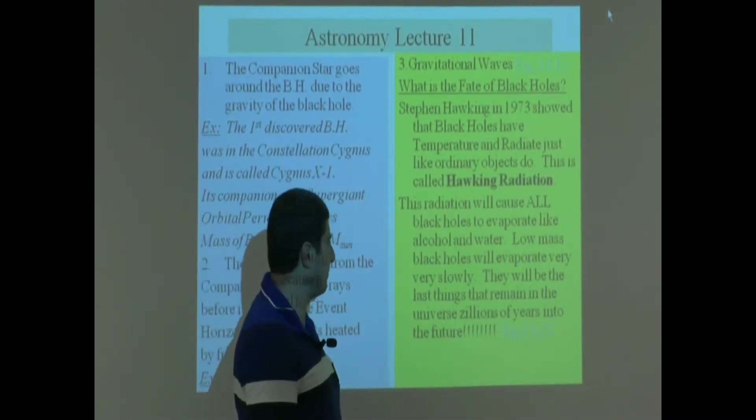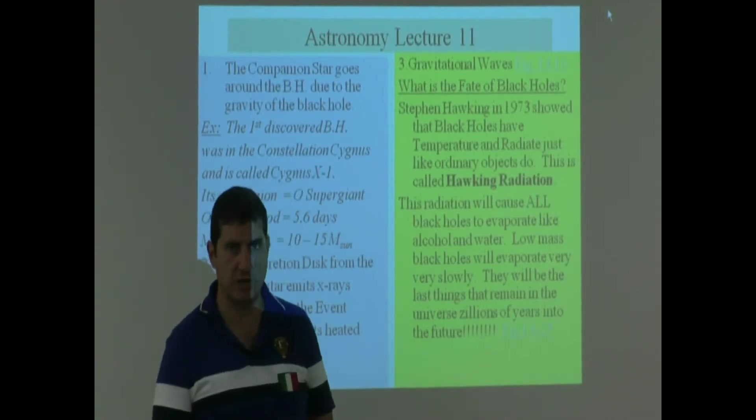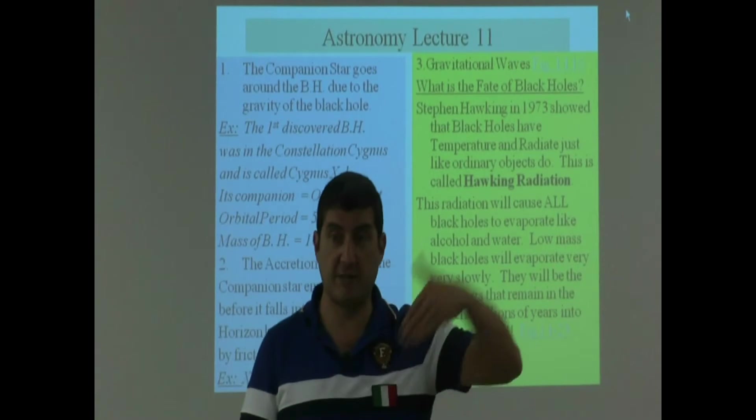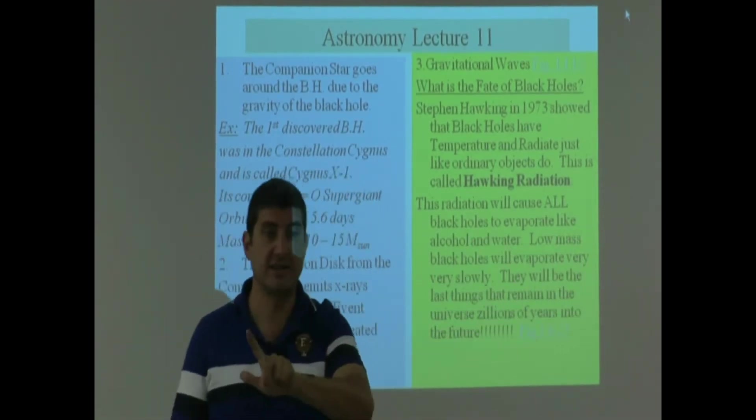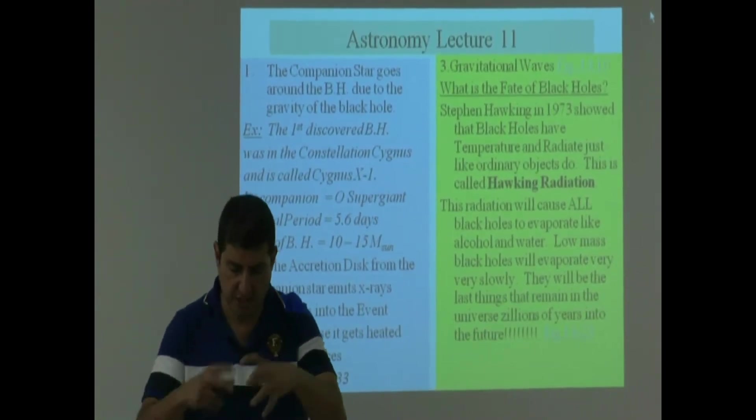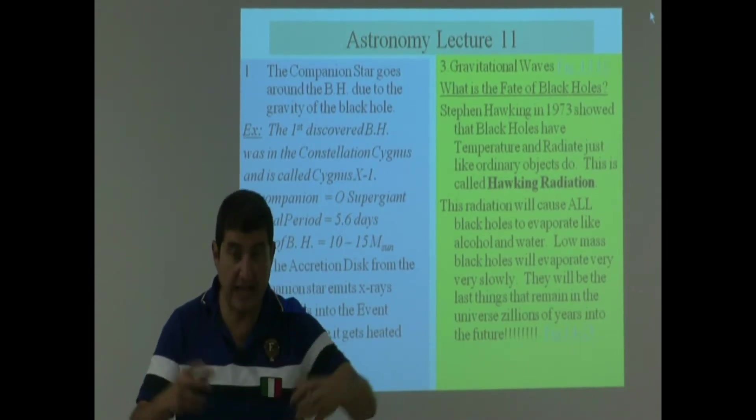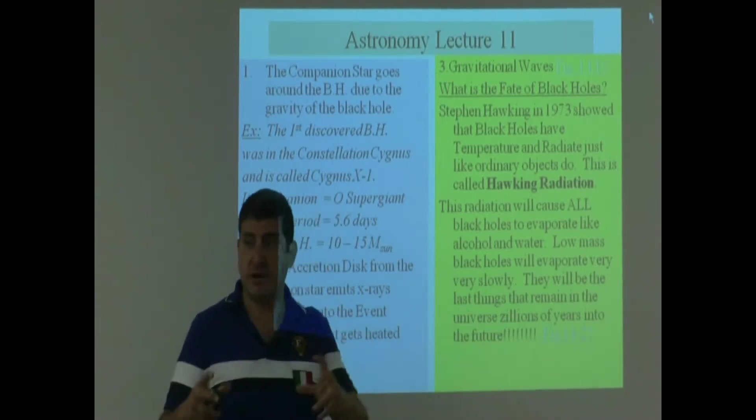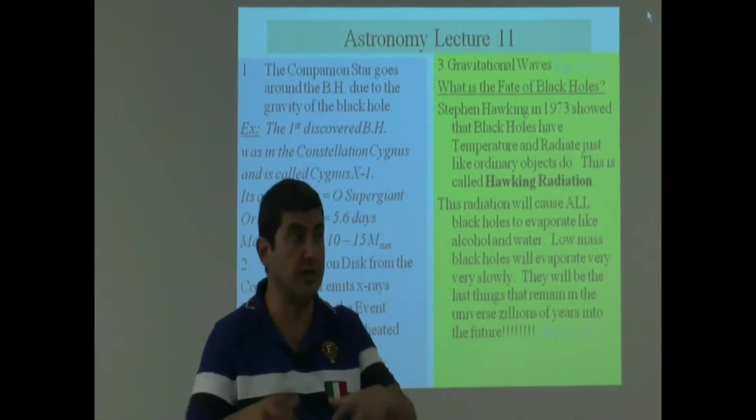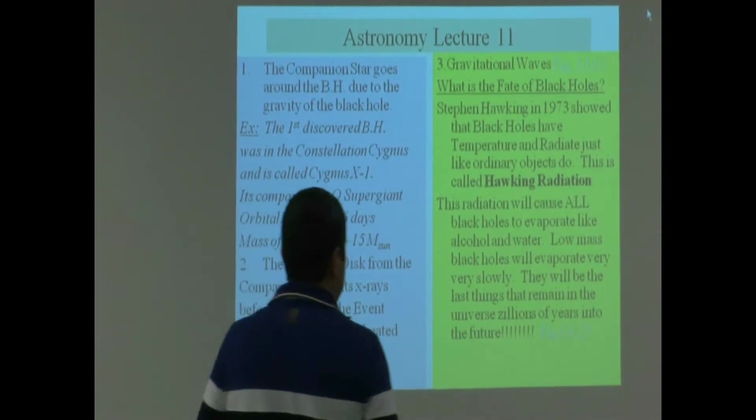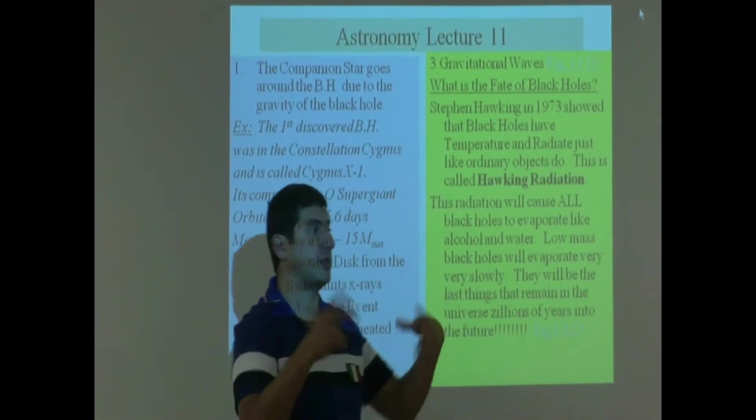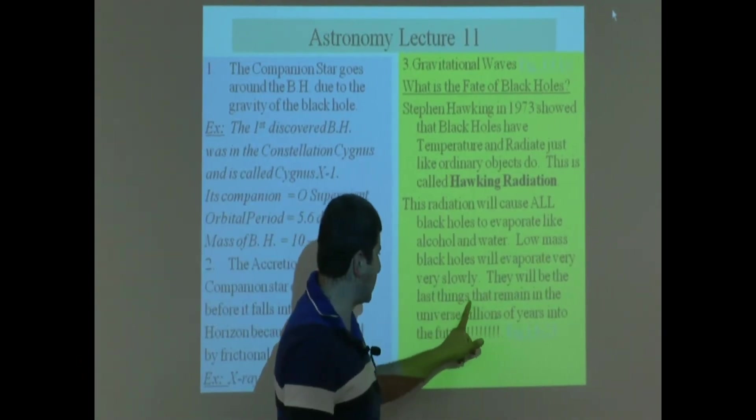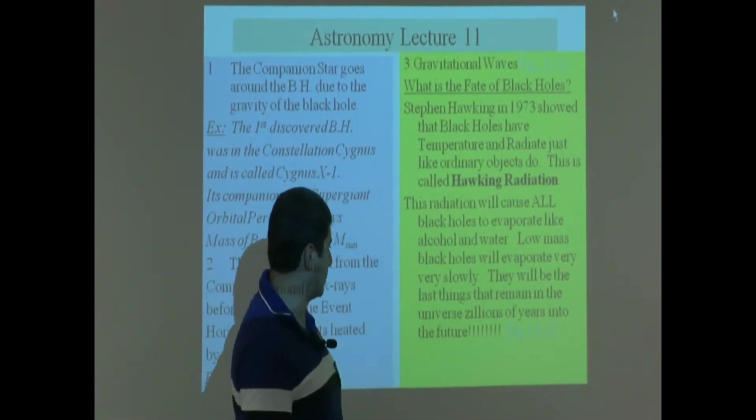This radiation will cause all black holes to evaporate like alcohol and water. However, low mass black holes will evaporate very, very slowly. Just like low mass stars die, it takes them a long time to die. Low mass star doesn't shine too bright, therefore it lasts very long. Low mass black hole doesn't evaporate very quickly, therefore it lasts longer. High mass black holes evaporate away their mass more quickly. They will be the last things that remain in the universe zillions of years into the future.